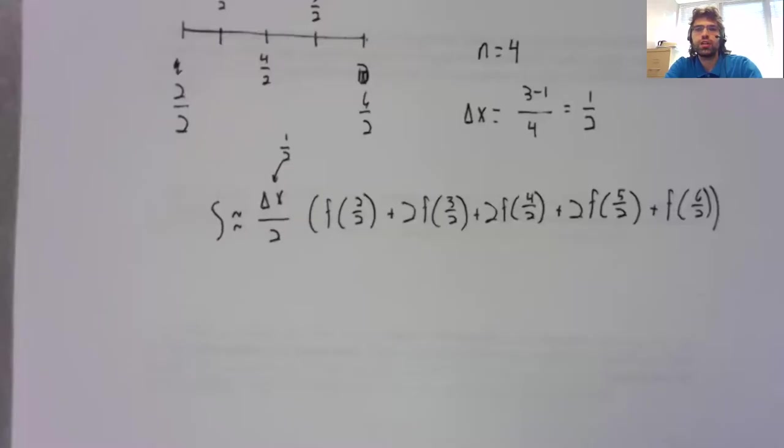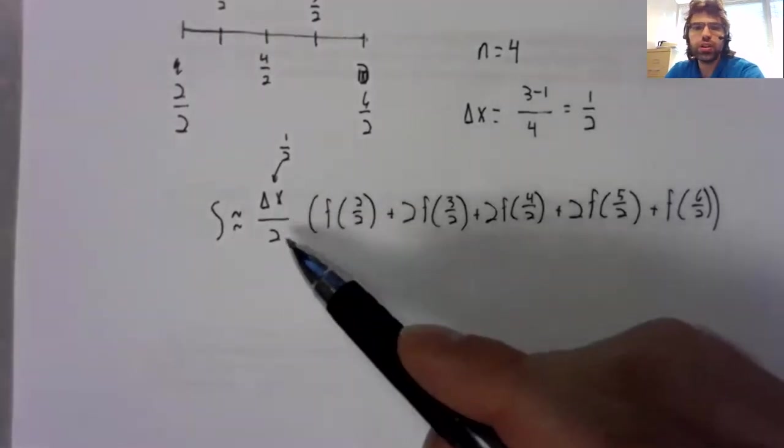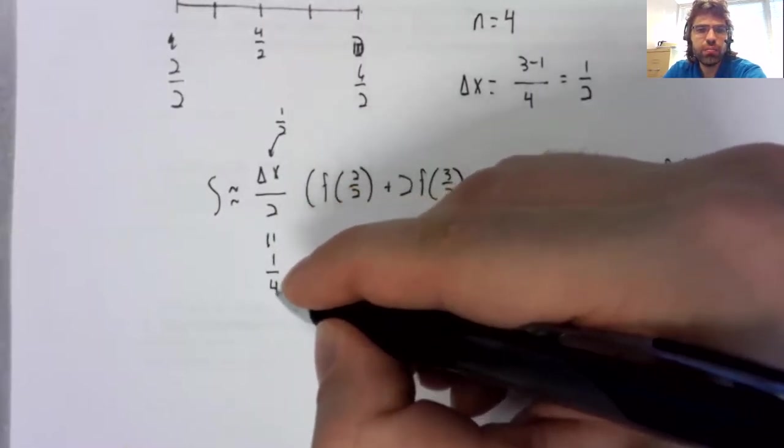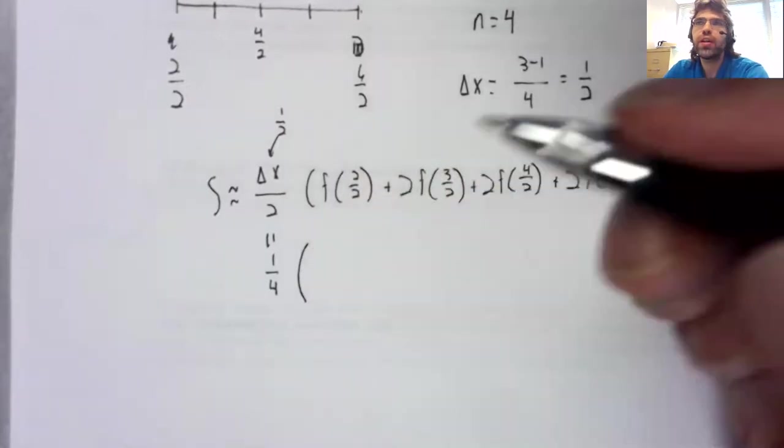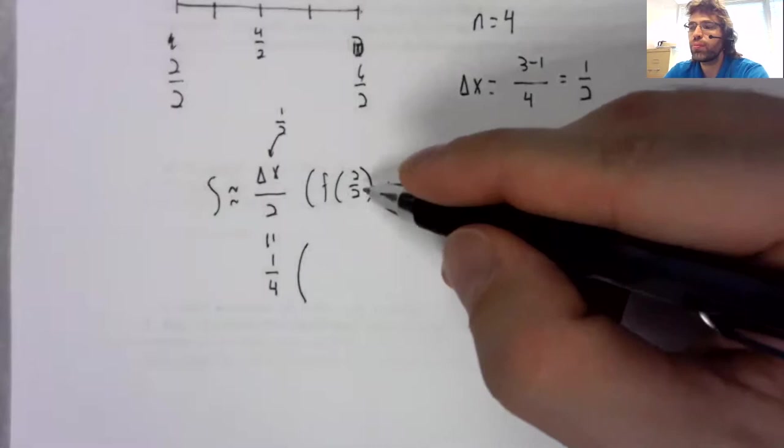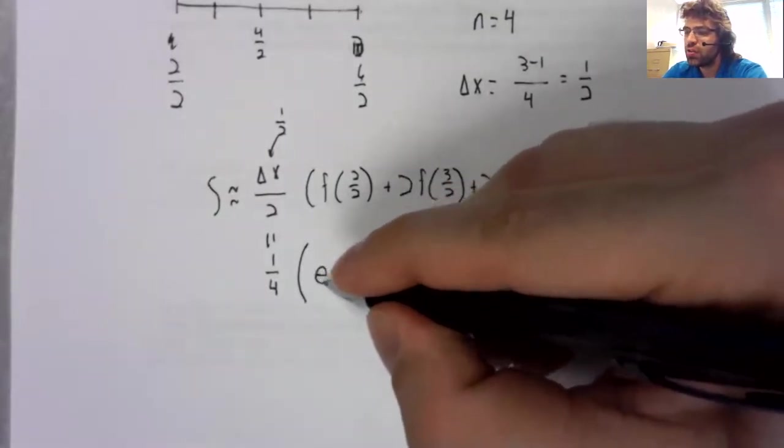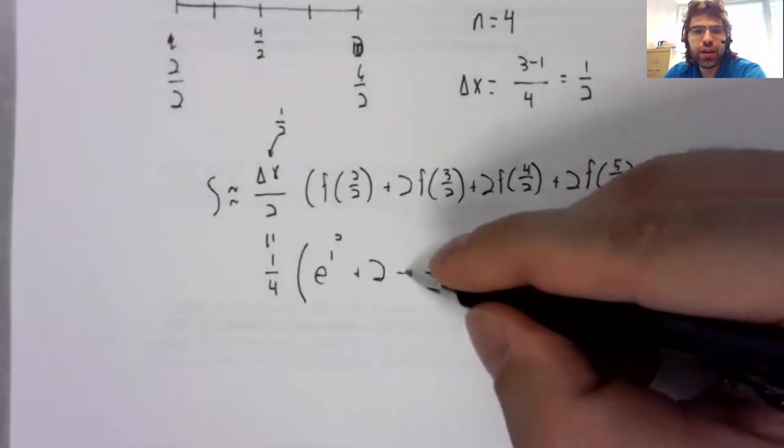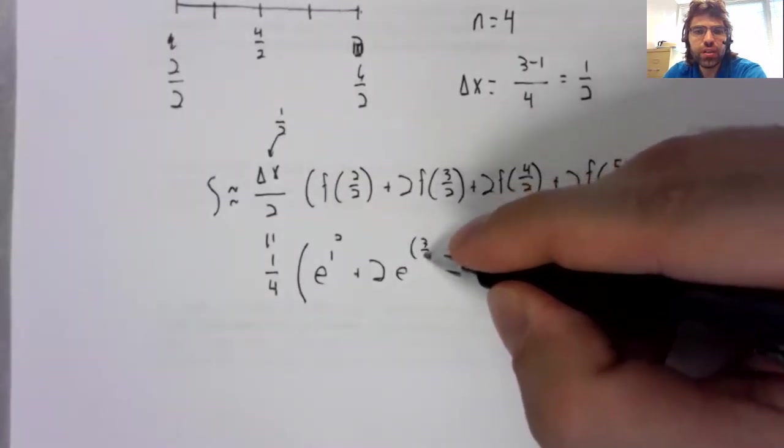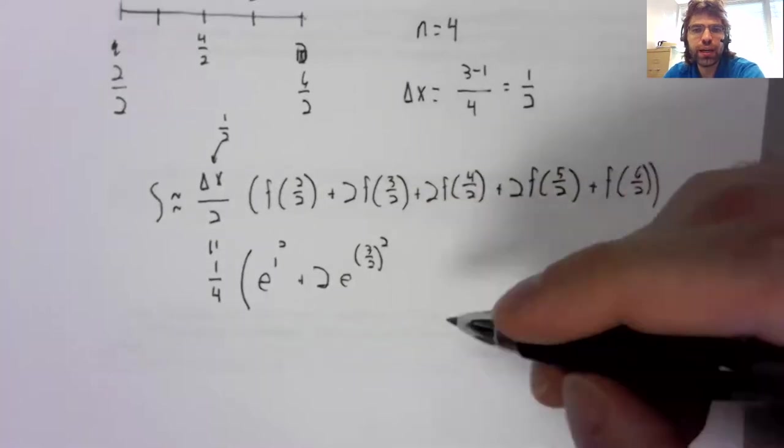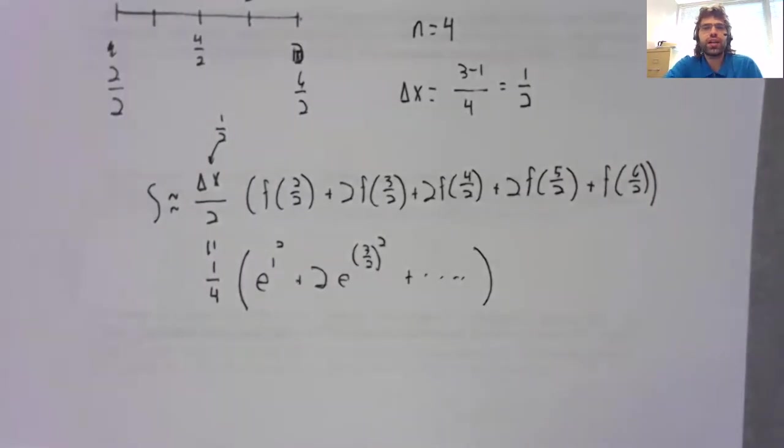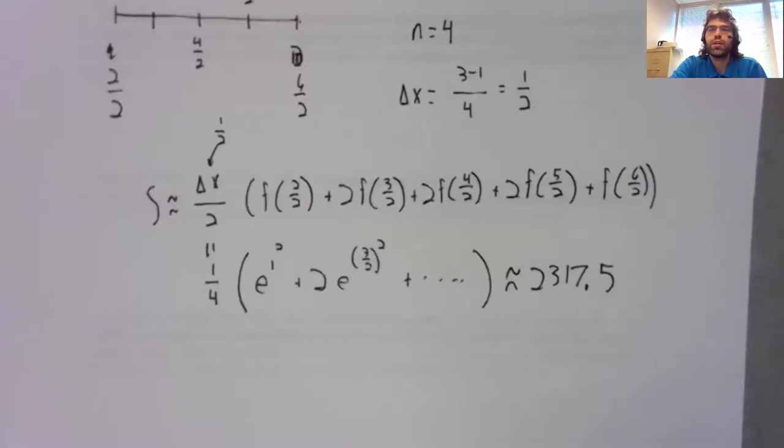Here's the trapezoidal rule. Delta x over two, because delta x is one half, becomes one fourth. And then it's just f of one is e to the one squared, f of three halves is e to the three halves squared, and so on. And you have to plug this into a calculator. It's a little tedious. I ended up with this.